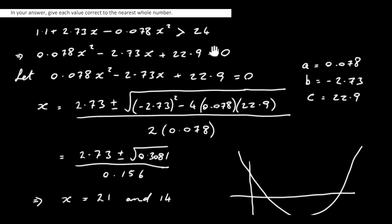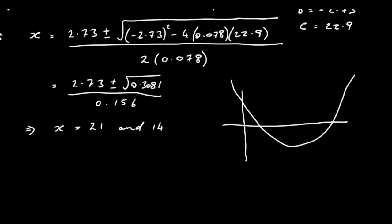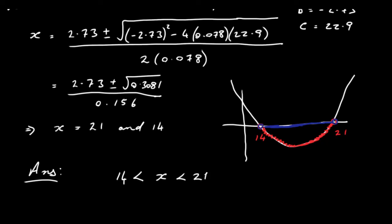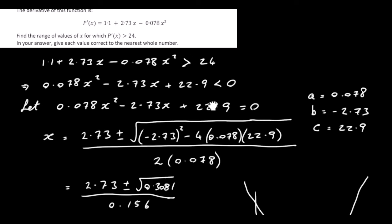We want Y to be less than zero, which corresponds to the X values between the two roots. We don't include 14 or 21 themselves. So our answer is X must be greater than 14 and less than 21. That's rounded to the nearest whole number.